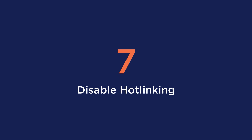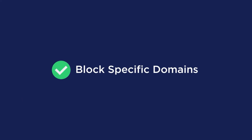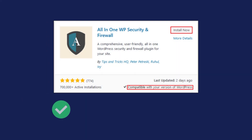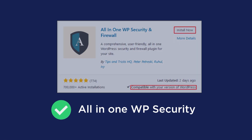For tip number seven, you can disable hot linking. If you're publishing high-quality content, there is always a risk that it might be reused or stolen by others. What's even worse is that they can use your images and your bandwidth by hot linking the content. In order to fix this, you need to block specific domains and choose a plugin like All-in-One WP Security that will protect your content against hot linking.